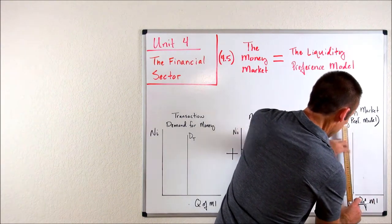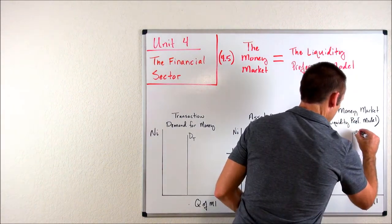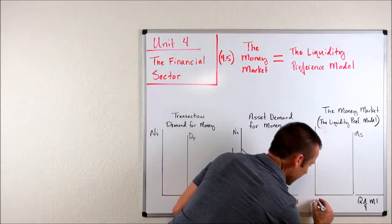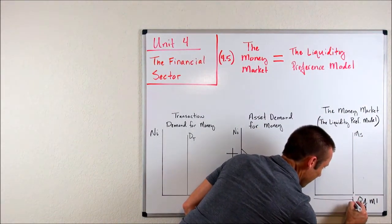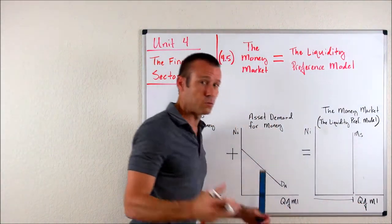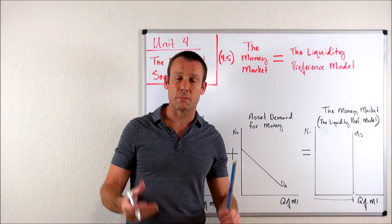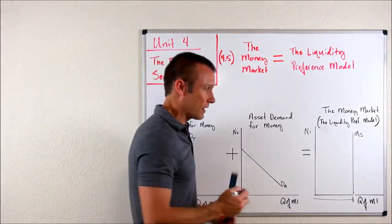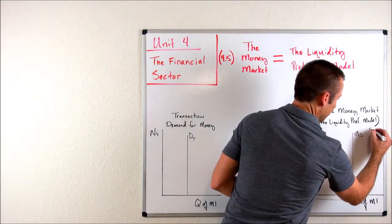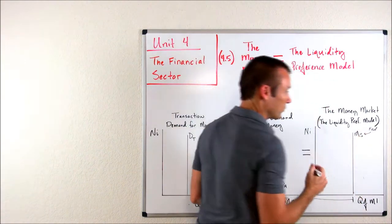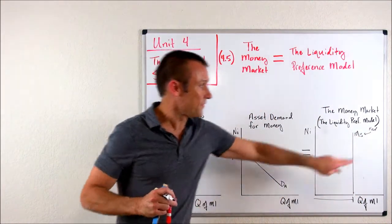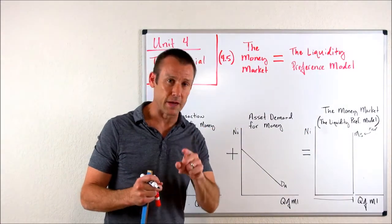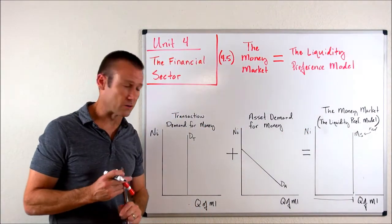Let's go ahead and put a vertical line on our graph. We're going to title that the money supply curve. The Fed has decided that this horizontal distance will be the quantity of money supplied — end of story. The Fed is determining this. I like to put 'Fed' with a little arrow to remind myself it is the Fed determining the money supply, not the nominal interest rate. Now let's build that money demand curve.